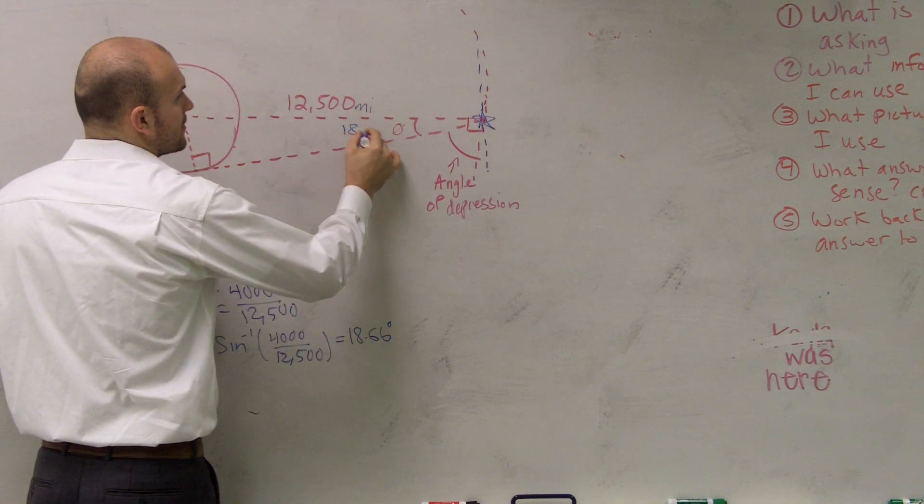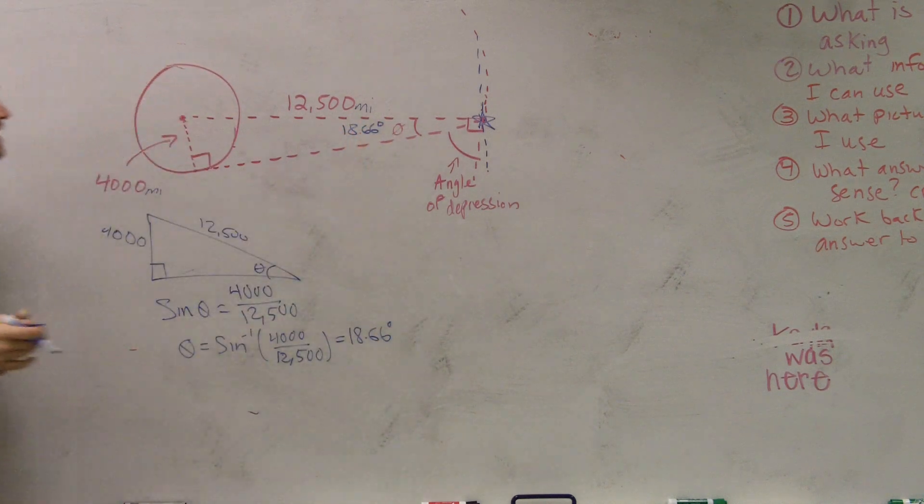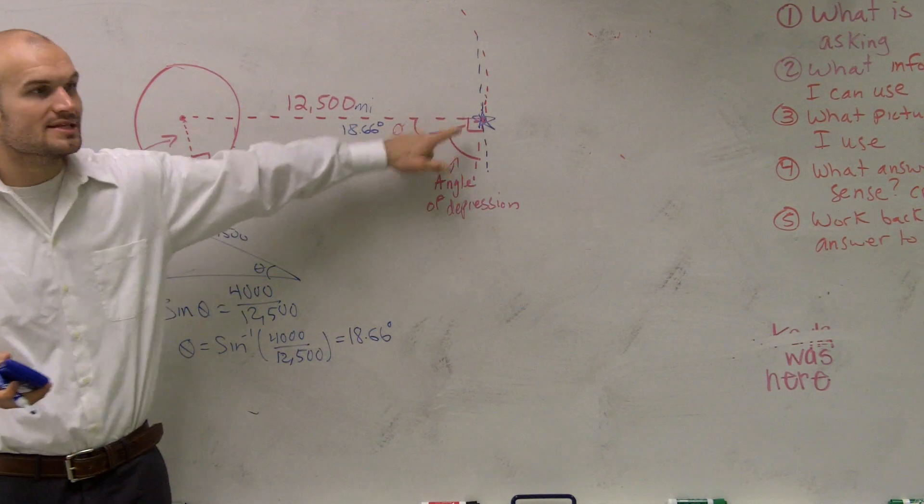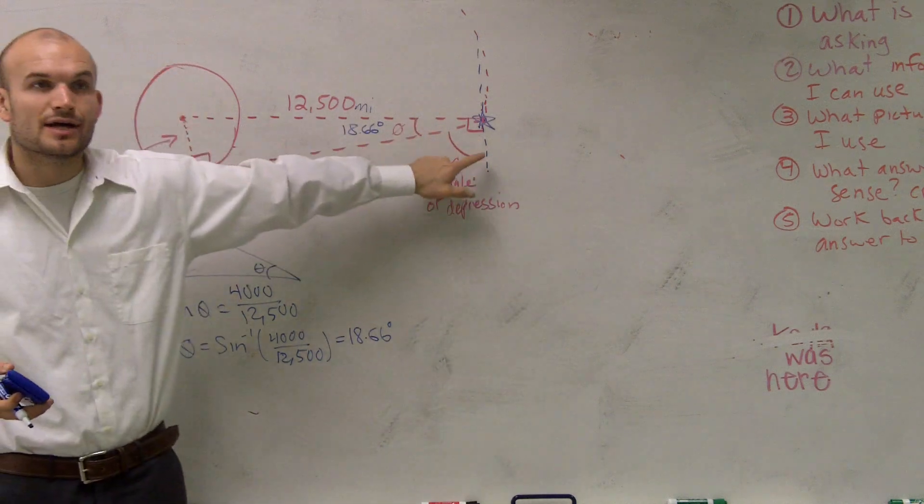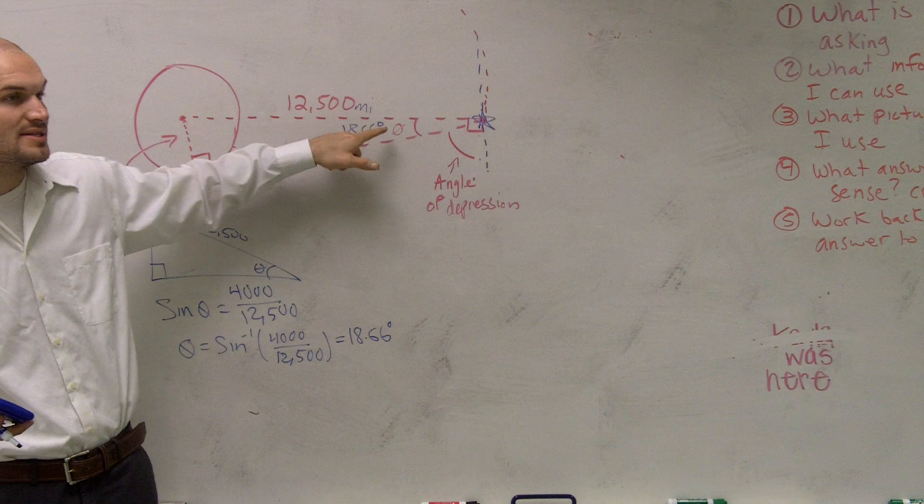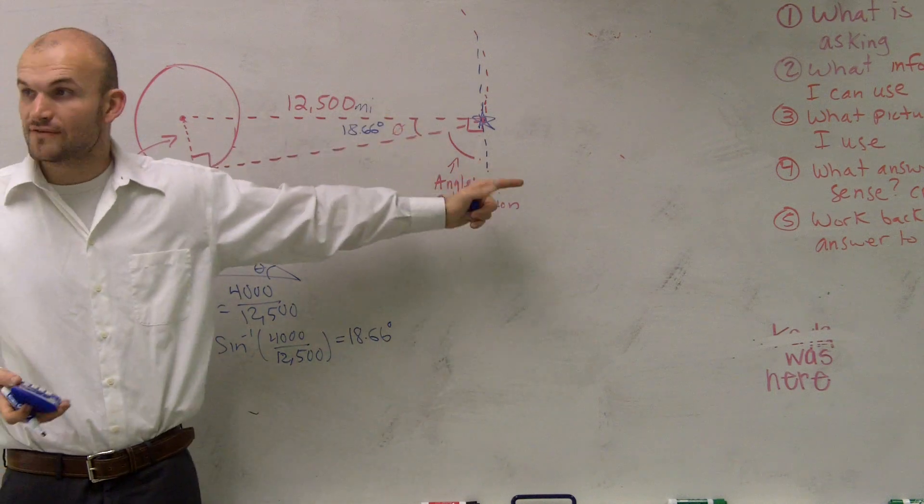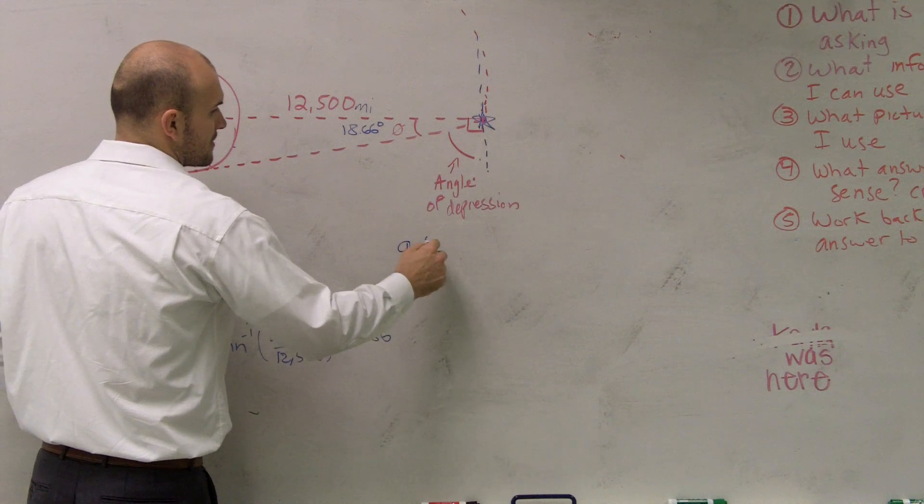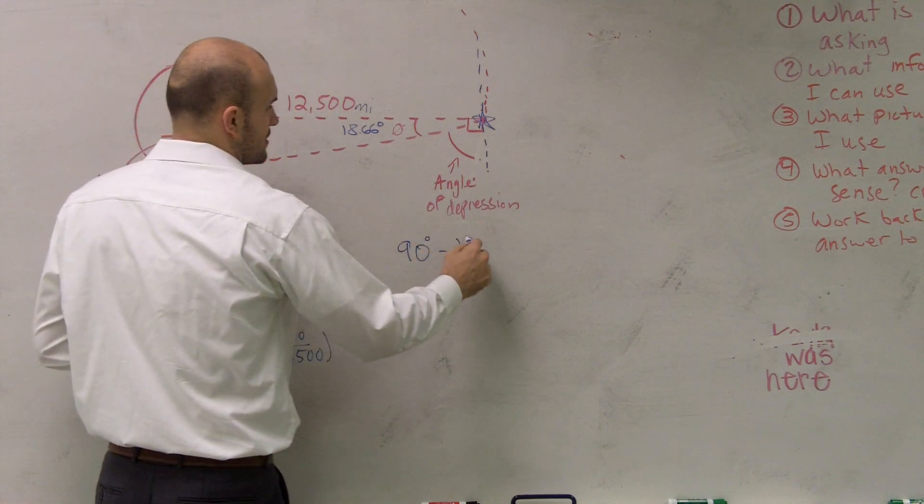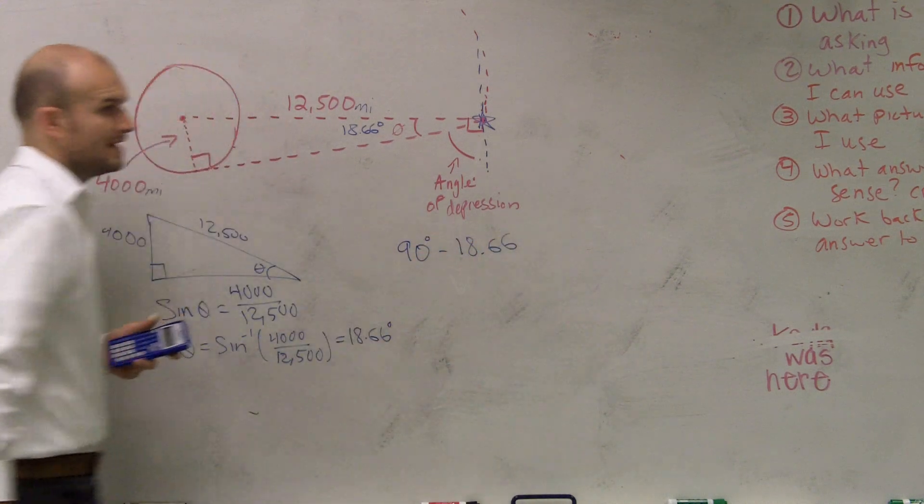So therefore, angle theta equals 18.66, but that's not what they're asking. They want us to find what is this angle of depression? So what is the angle of depression? Well, this is only 18.66 of 90 degrees. So to find my angle of depression, all I have to do is take 90 degrees and subtract 18.66.